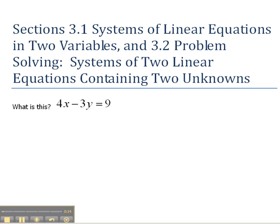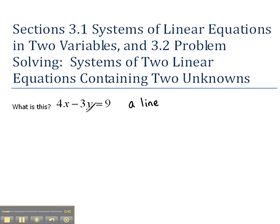So if we look at the basis of this, let's start out by reviewing something that we've already done. We have this problem that says 4x minus 3y equals 9, and we want to know what this is. If you'll remember back from previous things that we've done, this is really just a line. And we could graph this if we could get it into the proper form, which would be solving for y, so that we had it in the form y equals mx plus b.